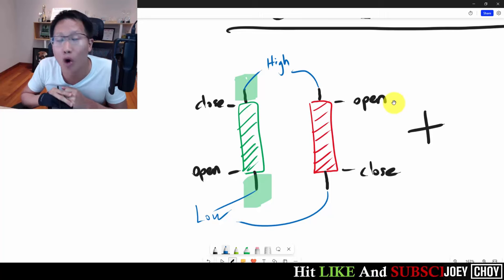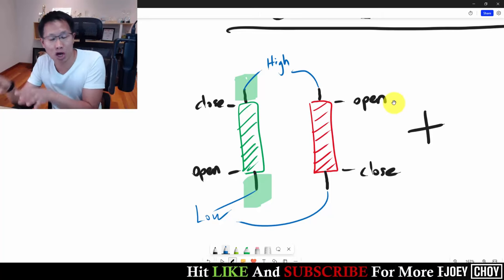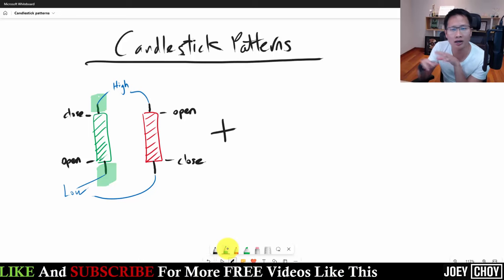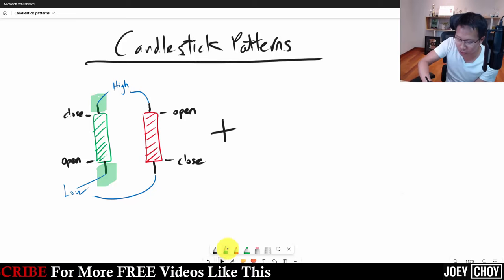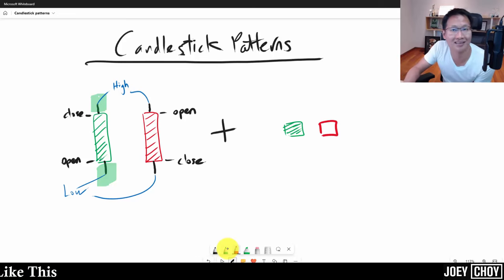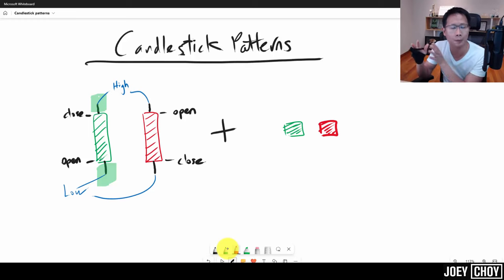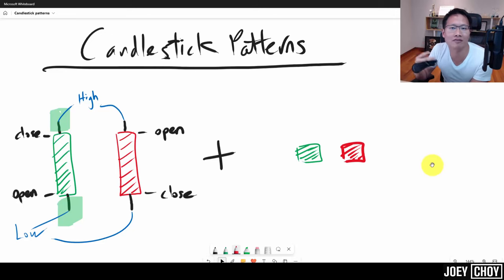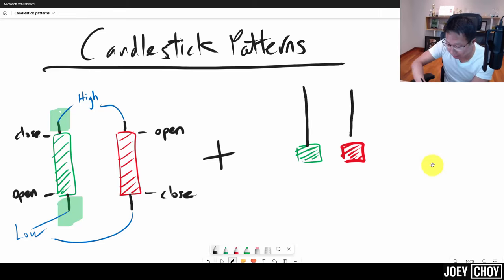Now that you know the fundamentals of a candlestick, let's dive into some of the key candlestick bars or patterns I look out for. One of the key ones would be a candlestick that has either a long upper shadow or a long lower shadow. For example, this is a green candlestick bar — it opens low and closes high. We could also have a red candlestick bar that opens high and closes lower. Nothing complicated, just the bar itself.